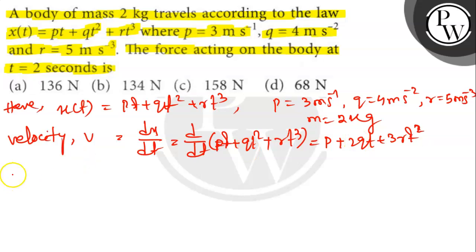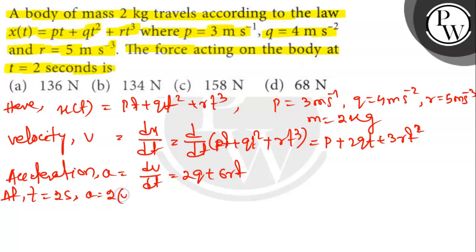Acceleration a = dv/dt = 2q + 6rt. At t = 2 seconds, a = 2(4) + 6(5)(2) = 8 + 60 = 68 m/s².